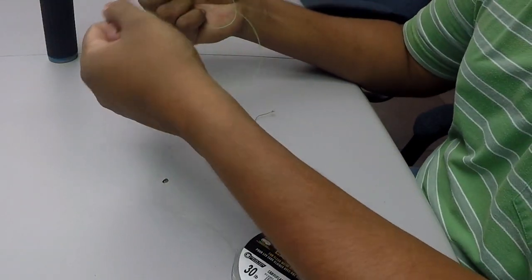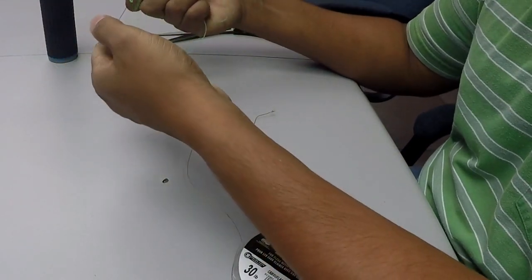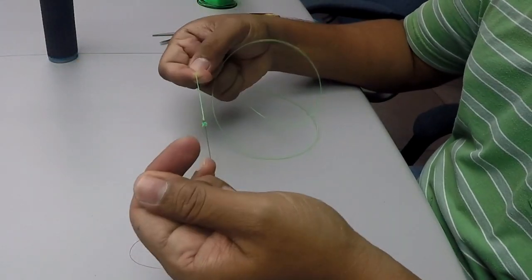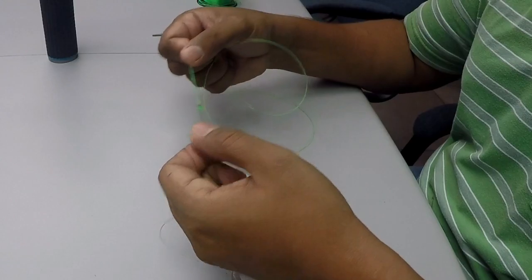So, like I said, this is braid to leader. This is braid to mono. You could do braid to fluoro. You could do braid to braid. You could do mono to mono. For everything, this line, this knot will work to join.